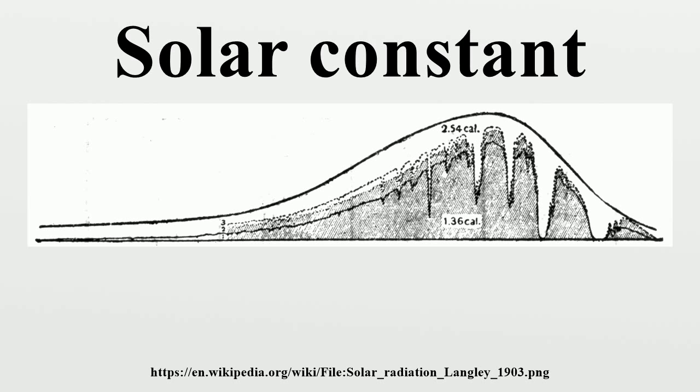Thus the Sun emits about 2.2 billion times the amount of radiation that is caught by Earth, in other words about 3.86 × 10^26 watts.